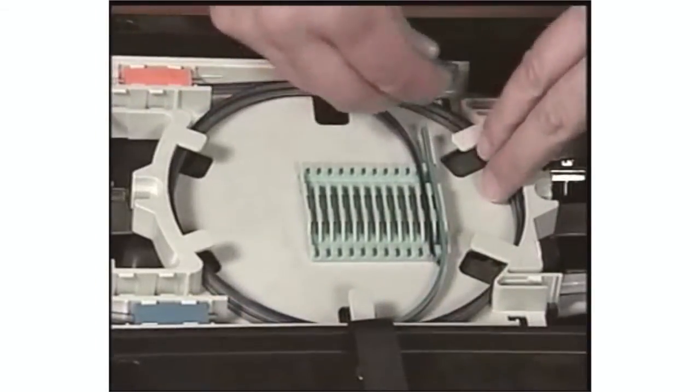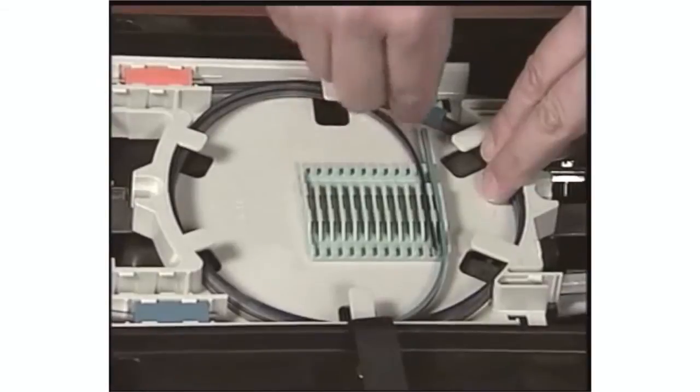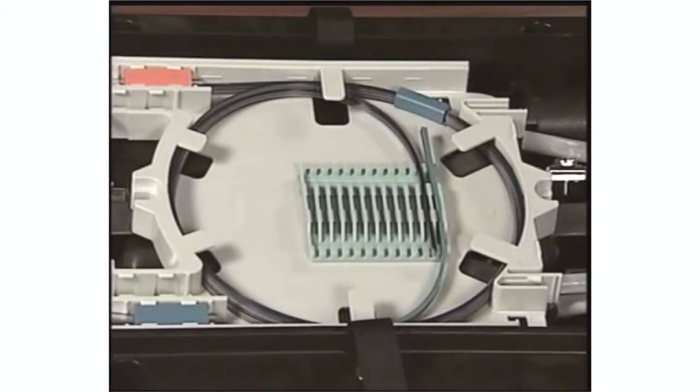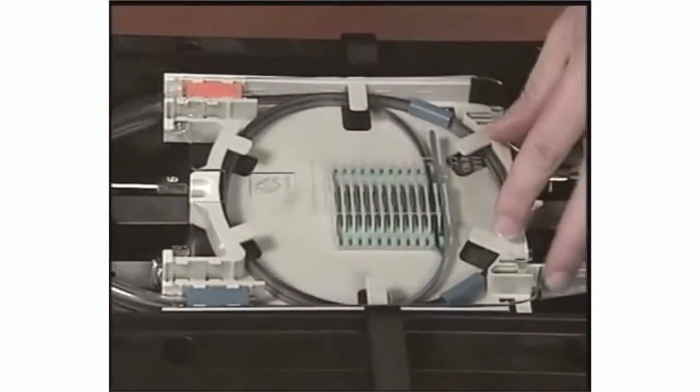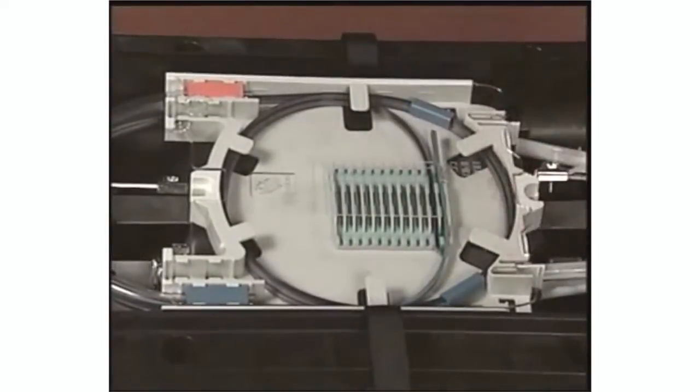PLP tip. Ribbon managers can also be used to manage the ribbons on the splice tray. Position cover onto tray and rotate forward until the tabs on the cover engage in the base of the tray.